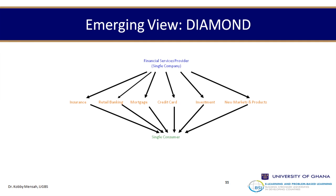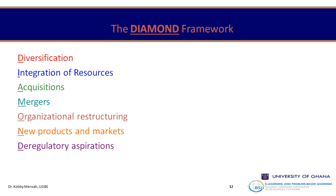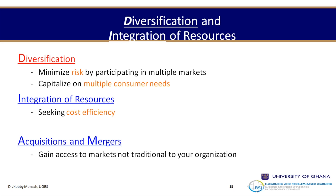Under the diamond view, the financial service provider does insurance, retail banking, mortgage, credit cards, investment, and every product you can think of. The diamond framework involves diversification, integration of resources, acquisitions, and mergers. Companies and financial services acquire other businesses in order to be able to offer all these services. The strategy of diversification and integration of resources allows a firm to minimize risk by participating in multiple markets and capitalize on multiple consumer needs.